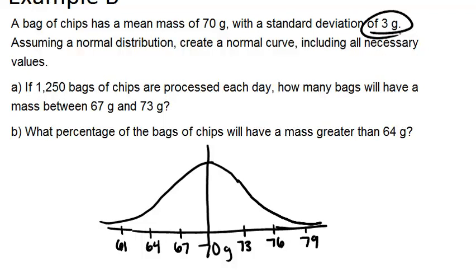Now, if 1,250 bags of chips are processed each day, how many bags will have a mass between 67 and 73 grams? So if we look on our graph, and this is why you want to make the graph, we can see that's within one standard deviation of the mean. So I know that's going to be 68% of all of my numbers. So I'm just going to do 68% times 1,250 and I'll get my answer of 850.